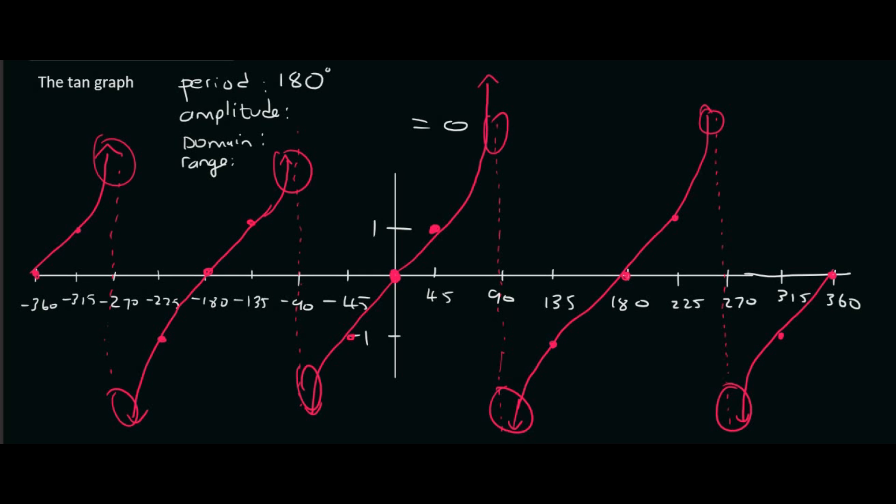For the amplitude. Now remember amplitude on a sin graph for example. We said that you should find the resting position which was over here. And then you should measure the distance to the highest point. Problem is with a tan graph is that it doesn't have a highest point.